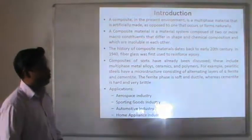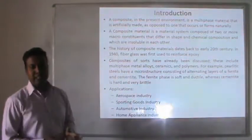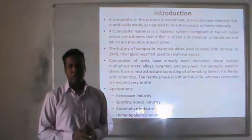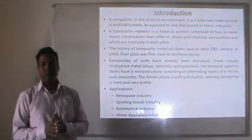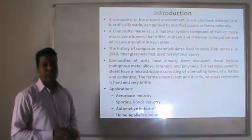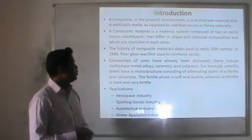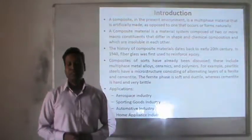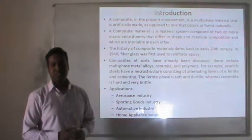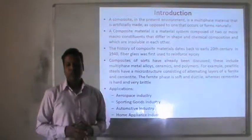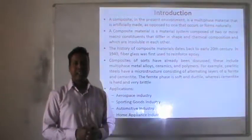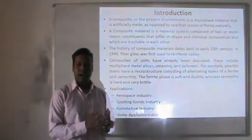The history of composite material dates back to the early 20th century. In 1940, fiber glass was first used to reinforce epoxy. Composites already discussed include multiphase metal alloys, ceramics, and polymers. For example, pearlitic steel has a microstructure consisting of alternating layers of alpha ferrite and cementite.